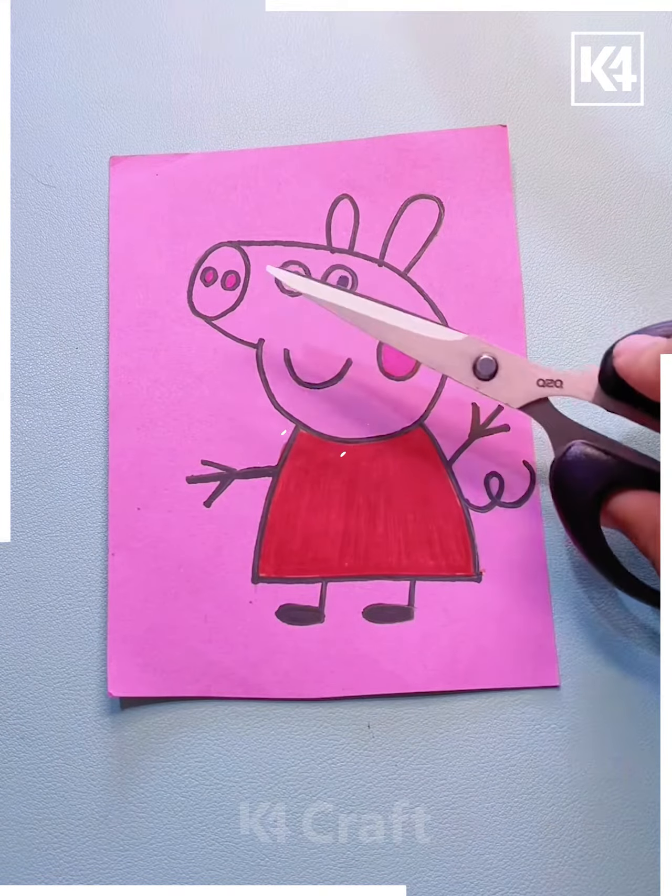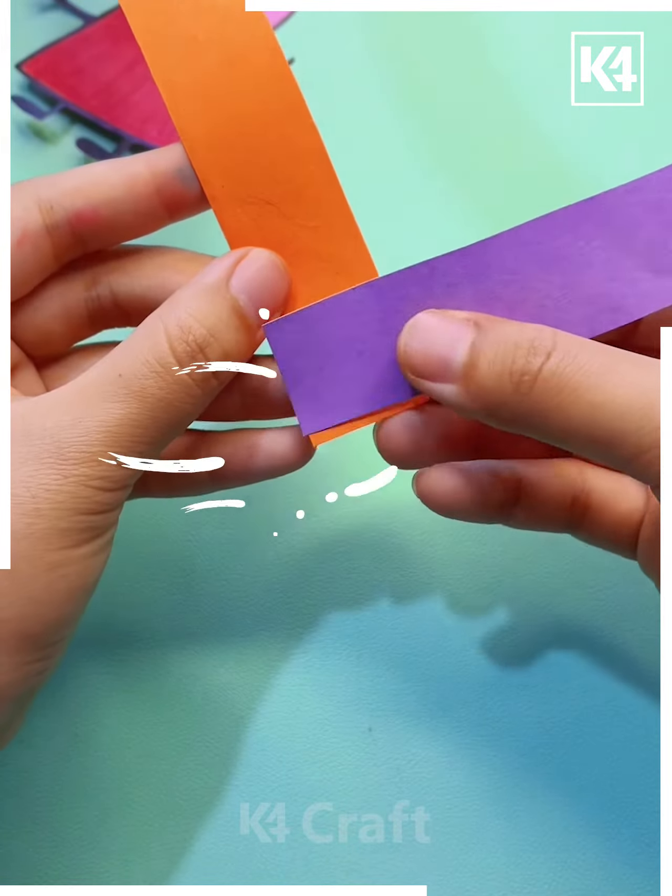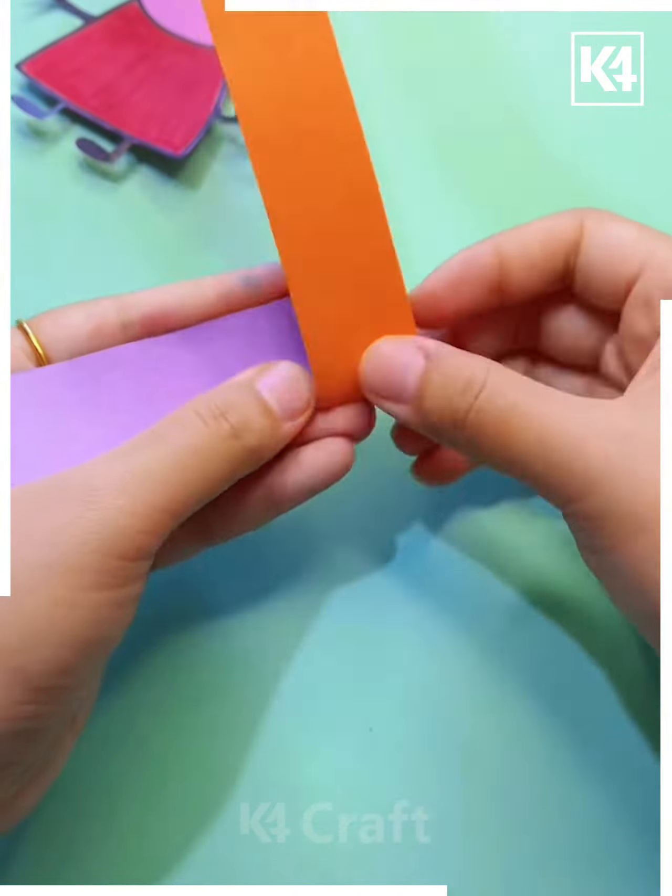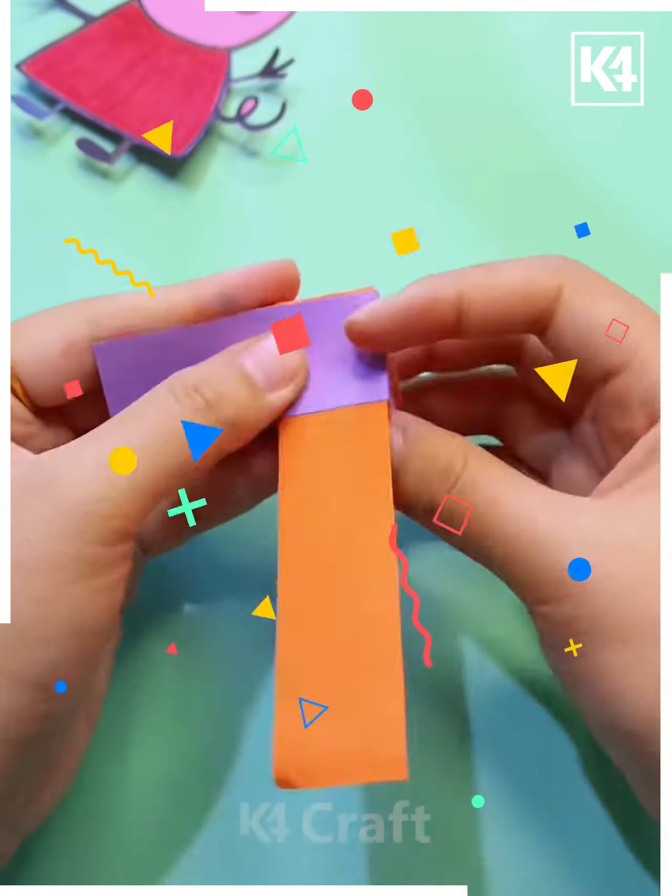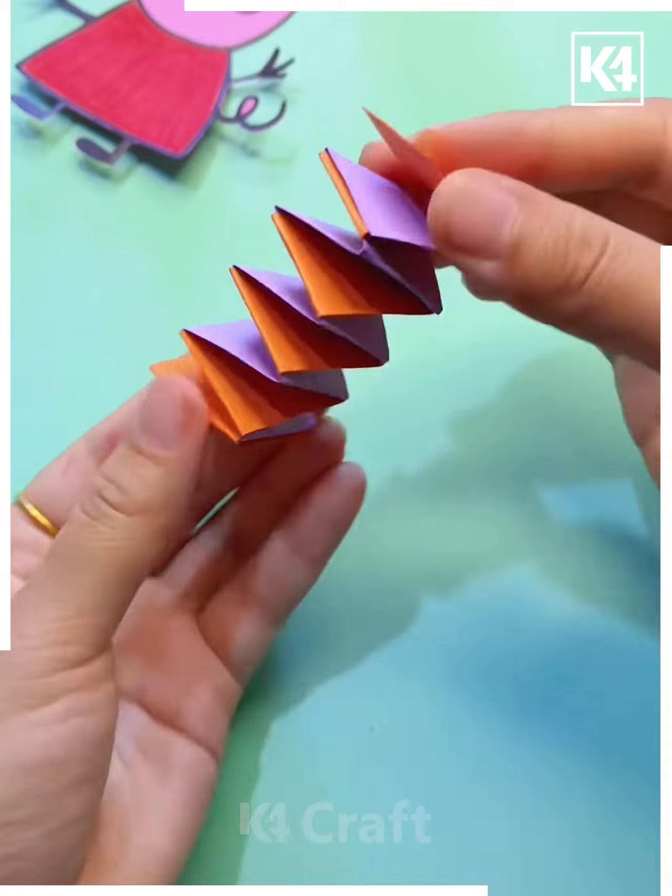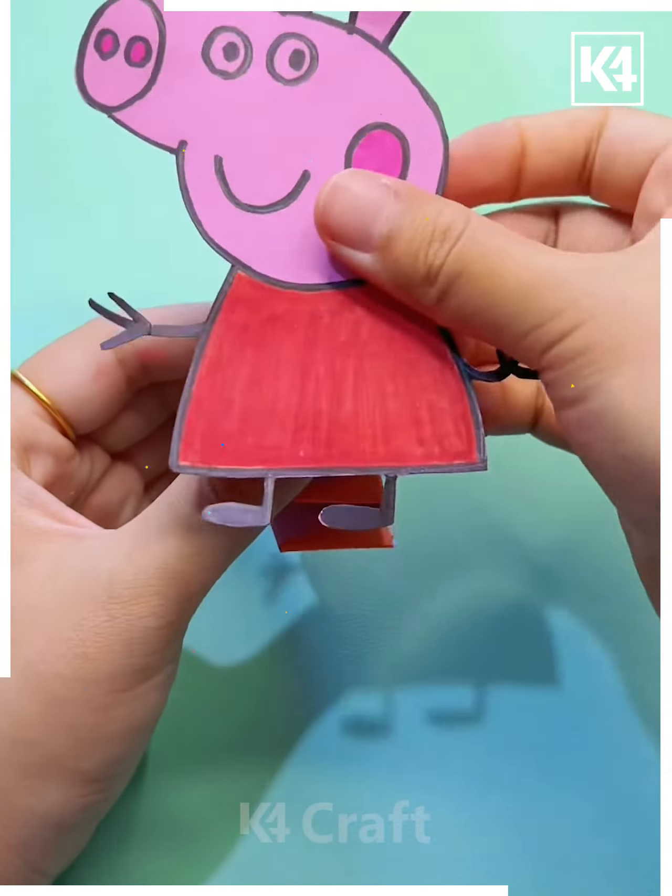Now here get the cutouts of Peppa Pig. Here you have to get the sheet just in a crisscross position like this. Keep on folding and getting the little squeezy and spongy. You have to paste it on the top and you can play with it.